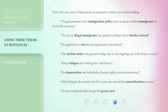Now, let's use some of these terms in sentences to help your understanding. The government's new immigration policy aims to attract skilled immigrants to boost the economy. The rise in illegal immigrants has sparked a debate about border control. He applied for a visa, but his application was denied. The asylum seeker was granted refuge due to the ongoing war in his home country. Many refugees are looking for a safe haven. His deportation was halted after human rights activists intervened. After living in the country for five years, she started the naturalization process. He was overjoyed when he got his green card.